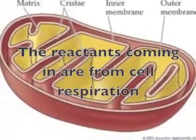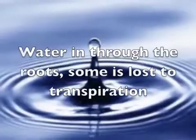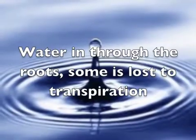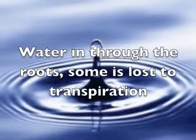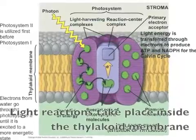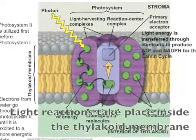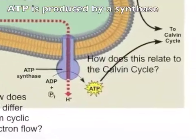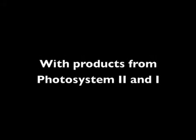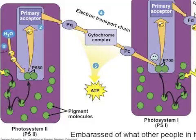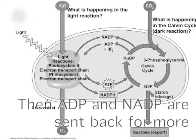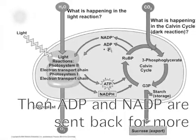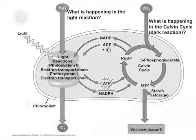The reactants coming in from cell respiration — water enters the root, some is lost to transpiration. Light reactions take place in the thylakoid membrane. ATP is produced by ATP synthase. CO2 is broken down during the Calvin cycle, and products from photosystems 2 and 1, ADP and NADP, are sent back for more.